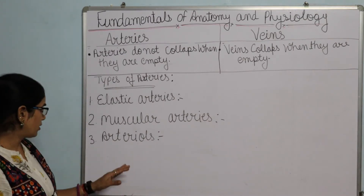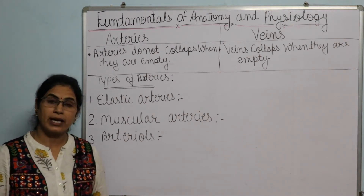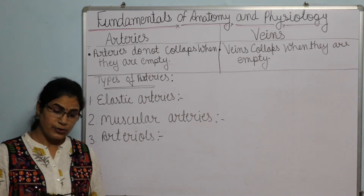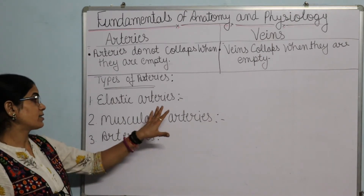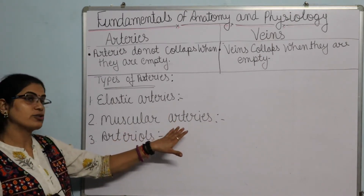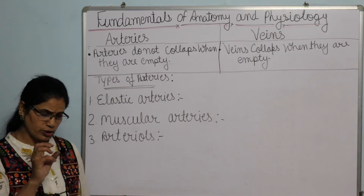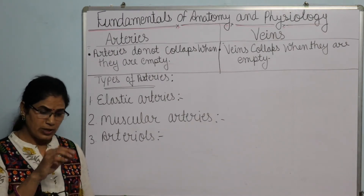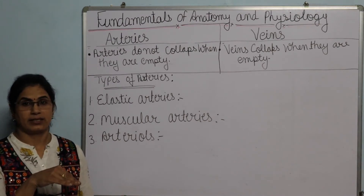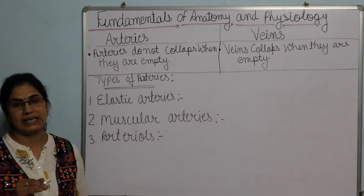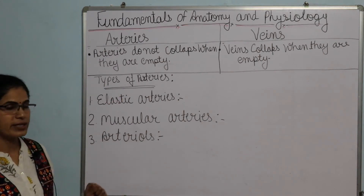The third type is arterioles. These are very small arteries. They are powerful enough to help maintain blood pressure. These three types of arteries are now completed.